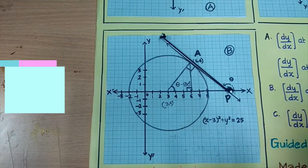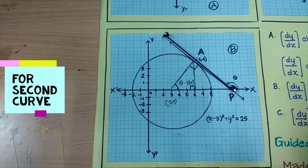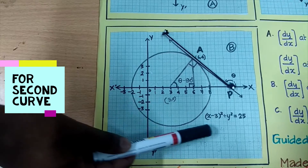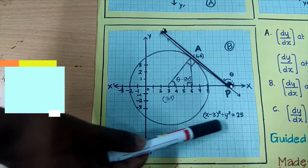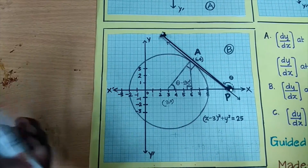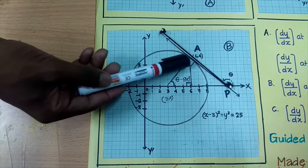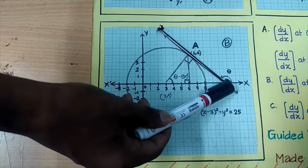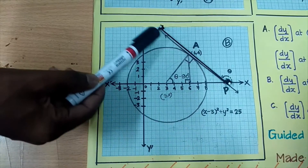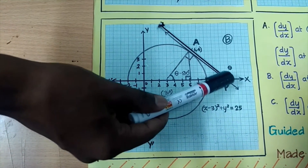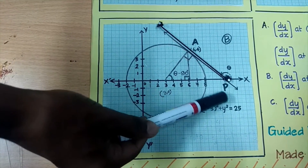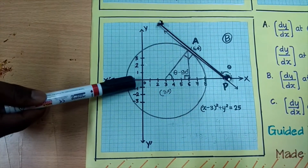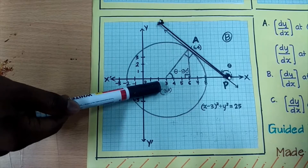In Sheet B, the graph of the circle (x−3)² + y² = 25 has been drawn. We take a point (6,4) on the circle. We will draw a tangent through the point (6,4) which will intercept the x-axis at point P, making angle θ with it. The center of the circle is (3,0) with radius 5.